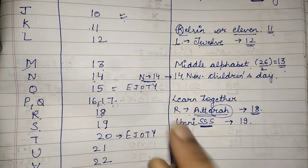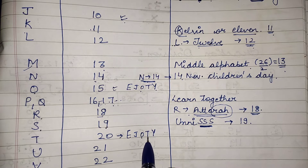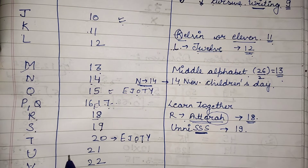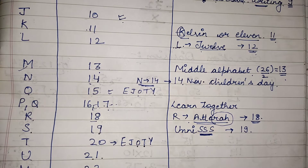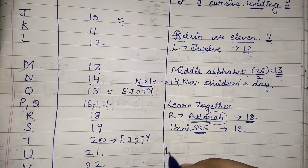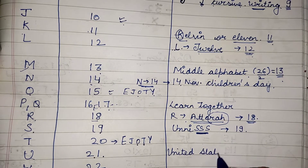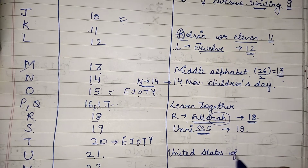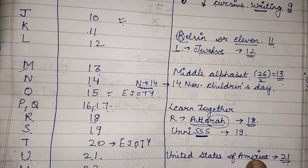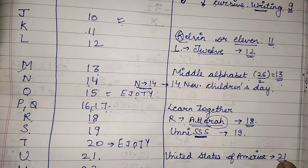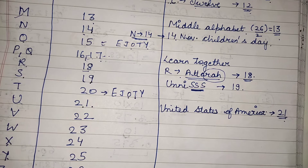T we have remembered with EJOTY — T is at the twentieth position. Now for U: we know that the United States of America has twenty-one guns... so we can remember that U is at the twenty-first position. These are just tricks to remember the position values — no logic, just simple mnemonics.